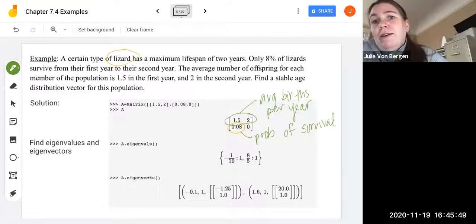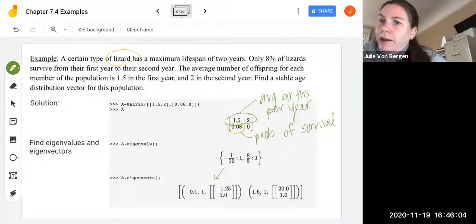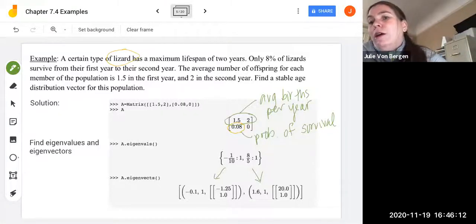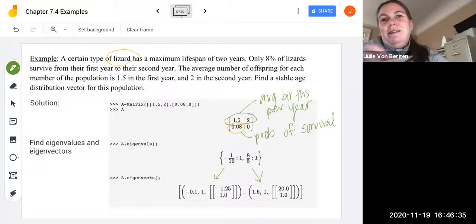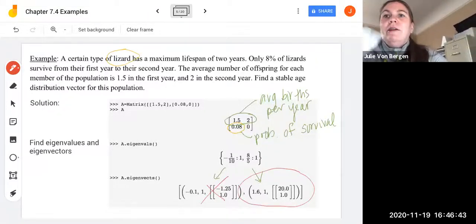All right, so using SymPy, I found the eigenvalues and the eigenvectors. So you can do eigenvalues, or you can also just go straight to eigenvectors because that gives you the eigenvalues there as well. So negative one-tenth, or you can call it negative 0.1, comes up once. And eight-fifths, you can call it 1.6 in decimal, comes up once. So the corresponding eigenvectors are negative 1.25, 1 and 20, 0. But would it make sense for negative values in terms of thinking about ages, right? And thinking about the individuals in each age class, because we're trying to find this stable age prediction vector. So it's not going to make sense to have this negative eigenvalue, and of course my eigenvector, so we are just going to use the positive eigenvalue in our calculation over here.